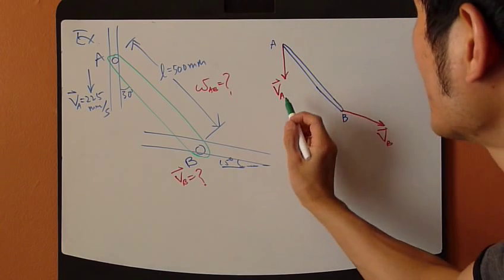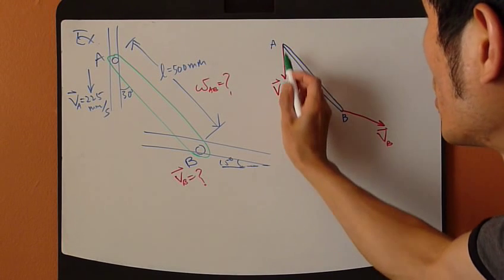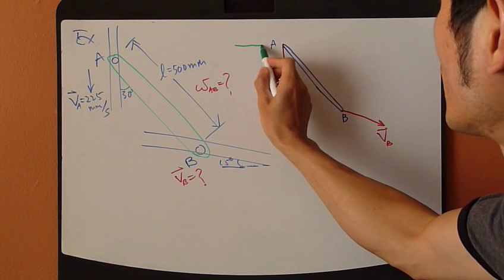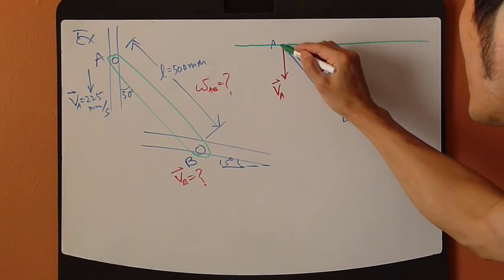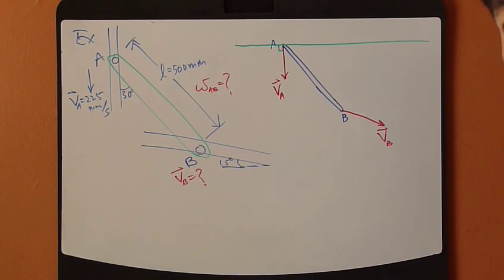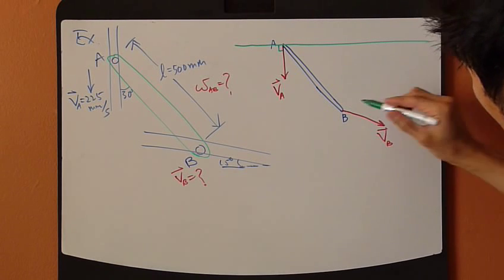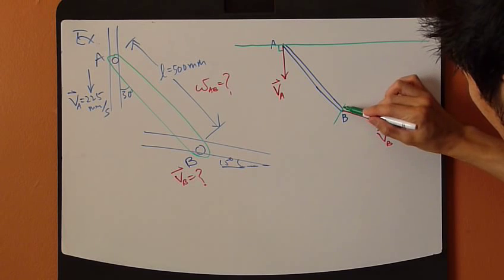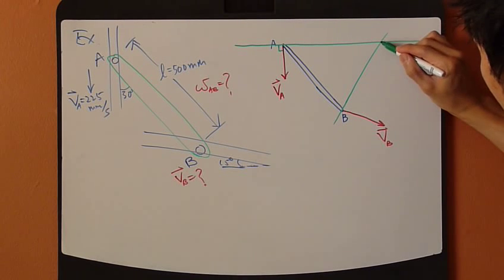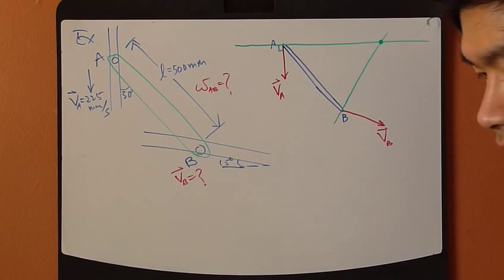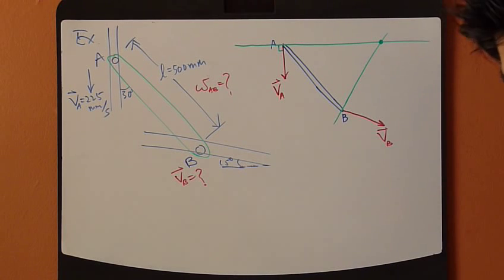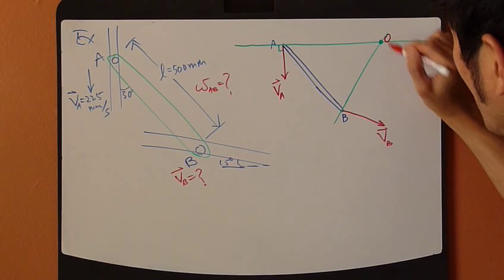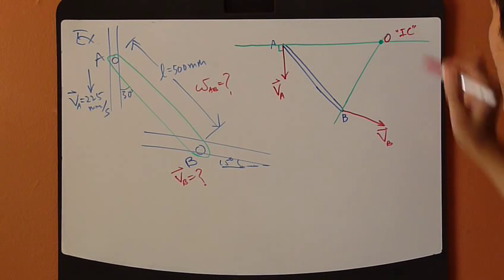The first line, you draw perpendicular to VA at point A. So, draw it here, like this. Where they intersect is exactly where instantaneous center is. So, this is point O, which is also instantaneous center.